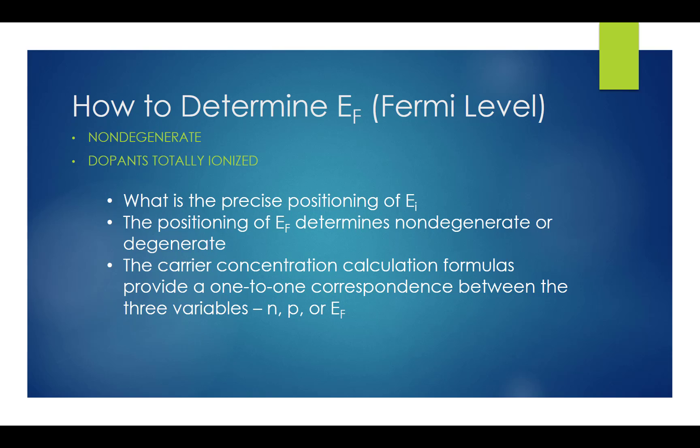We have learned the formulas for carrier concentrations N and P for non-degenerate semiconductors, and the value of positional Fermi level EF determines whether a dopant semiconductor is non-degenerate or degenerate. Actually, the formulas for carrier concentrations N and P provide a one-to-one correspondence between the Fermi level EF and the carrier concentrations N and P.